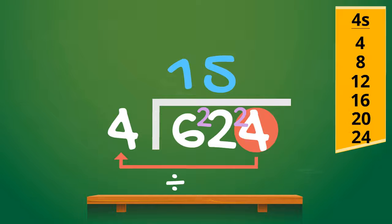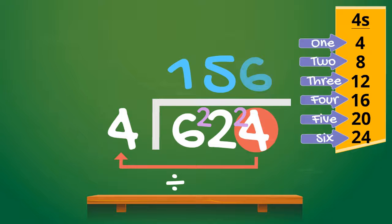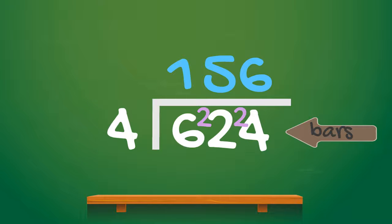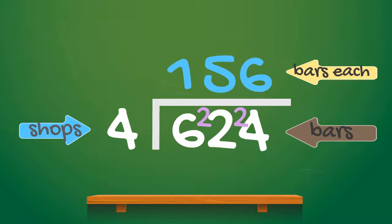So how many lots of 4 are there in 24? Well there's 6. Don't forget to put your division answer up top. So at the end of the day I had 624 chocolate bars to share between 4 different shops, and they're all going to get 156 chocolate bars each. Great stuff.